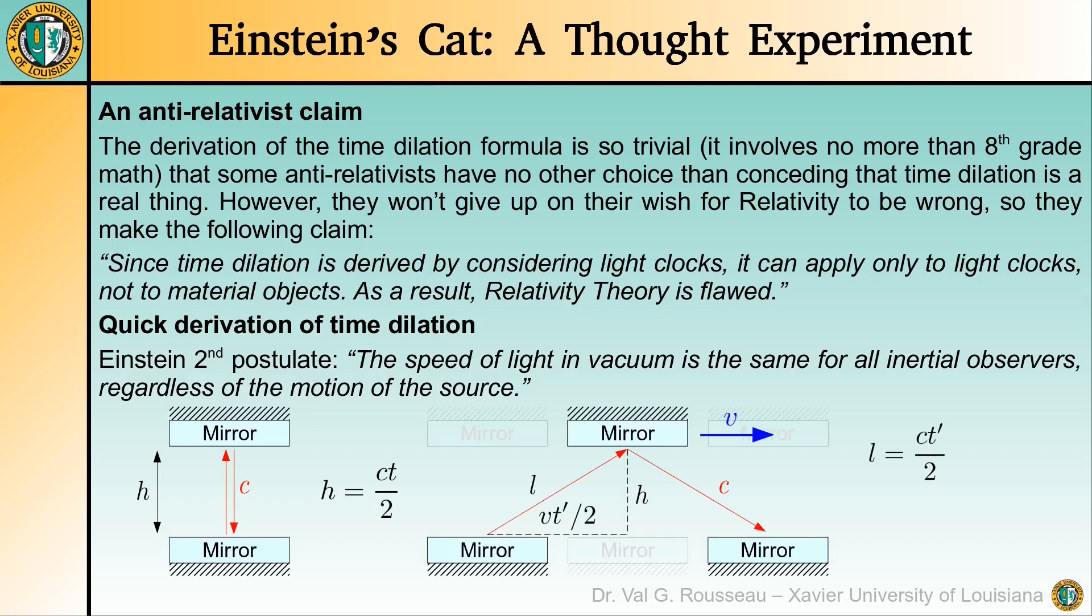Now, suppose that an observer is in another inertial frame in which the light clock is traveling to the right at speed v. Then, the observer sees the light pulse traveling along a diagonal path of length l from the bottom to the top mirror, which is longer than the distance h between the mirrors. Since the speed of the pulse is the same as in the previous inertial frame, it doesn't take a genius to understand that the observer will measure a longer time t' for the pulse to achieve a round trip. So, time dilation is already proven.